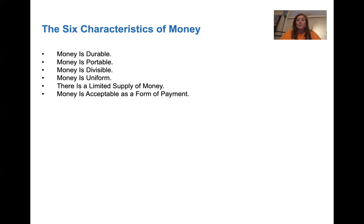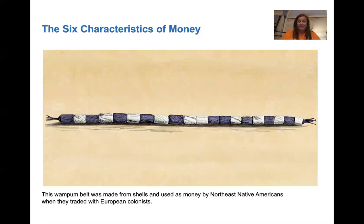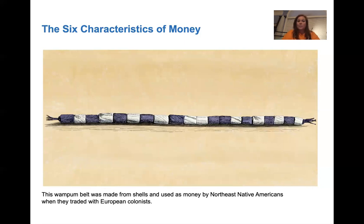Money is also an acceptable form of payment — just about everybody takes money. Here's a wampum belt that European colonists would trade with Native Americans. It was unique and different — they could go back to Europe and say, 'Hey, look what I got in the Americas.'